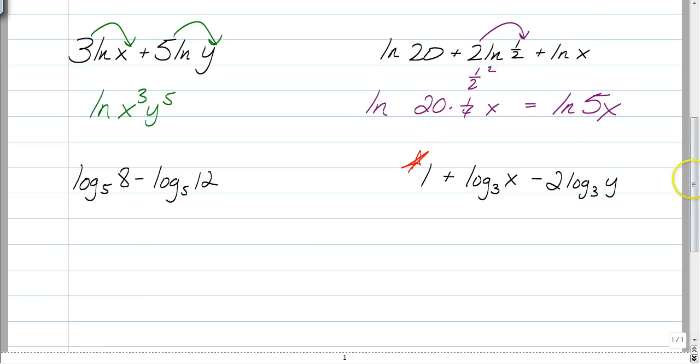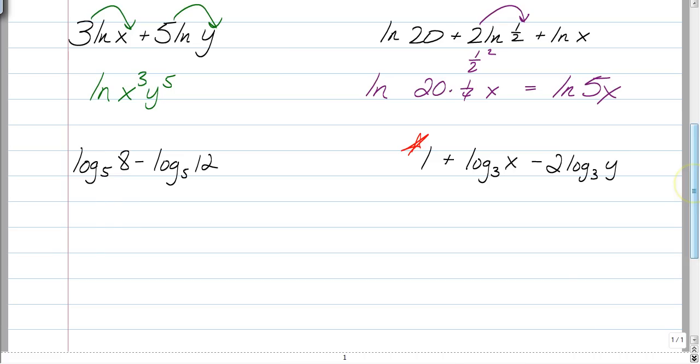Second to last problem coming already. So, we have a log base 5, so we're going to write log base 5. And then, we just have our 8 divided by 12, which we can simplify to two-thirds. That's it.